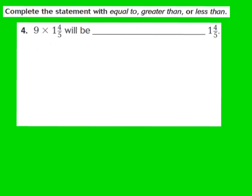Now let's take a look at question number 4. The directions say complete the statement with equal to, greater than, or less than. For question 4, they give us the problem 9 times 1 and 4 fifths, and we have to decide: is the product going to be equal to, greater than, or less than 1 and 4 fifths?